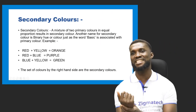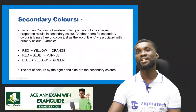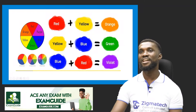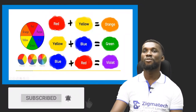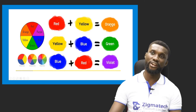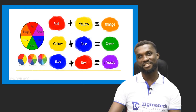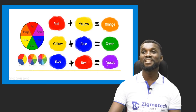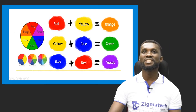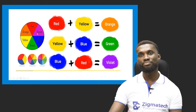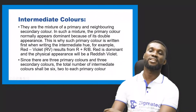The colors on the right-hand side are the secondary colors. This is the image I'm trying to explain: red plus yellow gives you orange, yellow plus blue gives you green, blue plus red gives you violet or purple. This is the color wheel of the secondary color — you see red plus blue gives purple in the middle, blue plus yellow gives green, and yellow plus red gives orange.